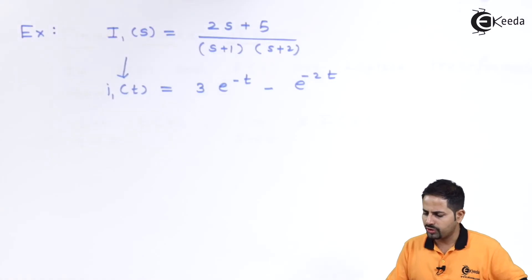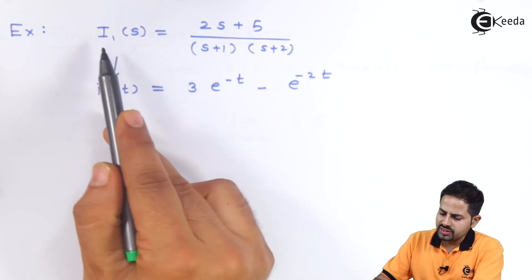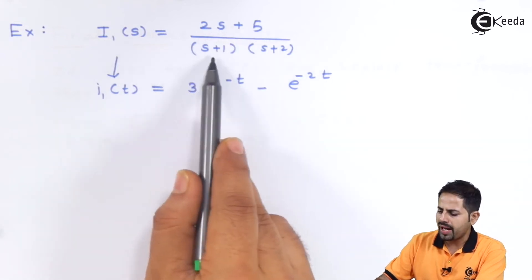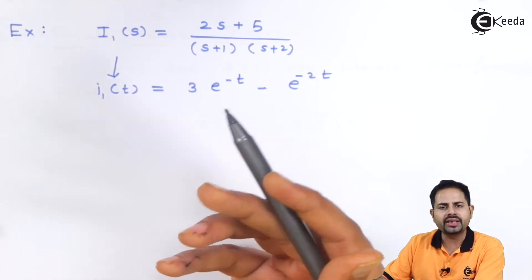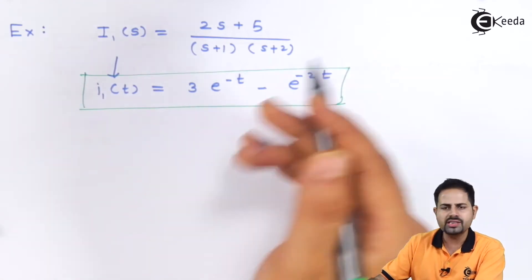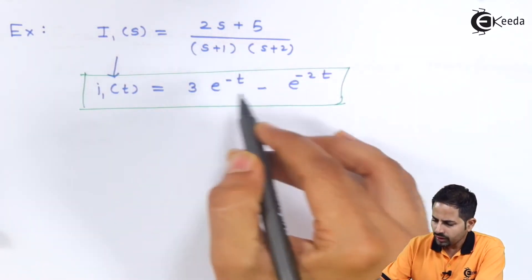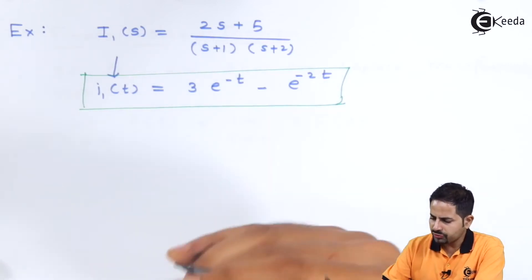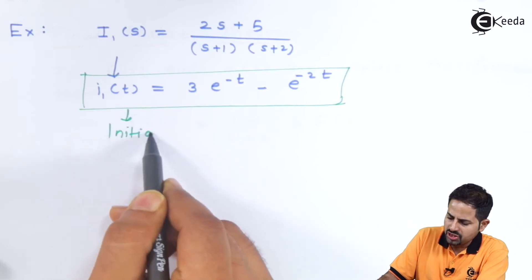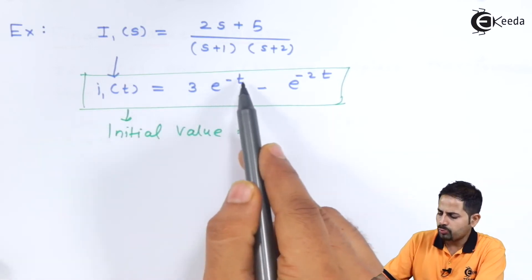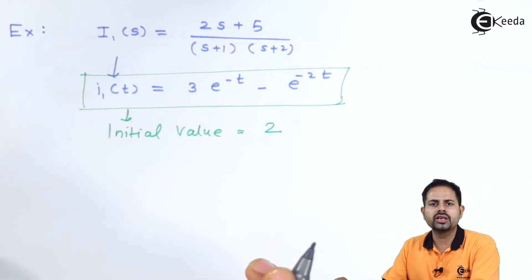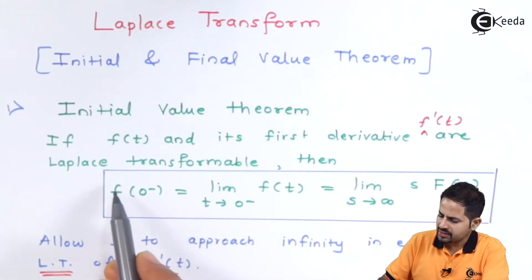Now we will solve a numerical example. We are given I1(s) = (2s + 5) / [(s+1)(s+2)]. By applying partial fractions and taking the inverse Laplace transform, i1(t) comes out to be 3e^(-t) minus something — we will assume the given answer is correct. Since we want the initial value, we put t = 0: 3·e^0 = 3·1, giving an initial value of 3... actually putting t=0 gives 3, so our answer should be verified.